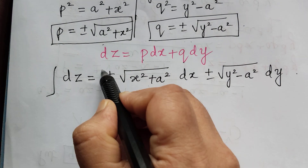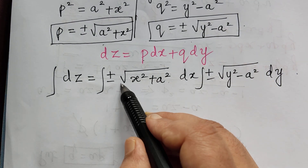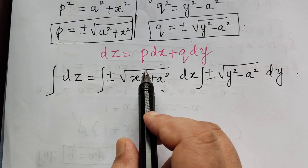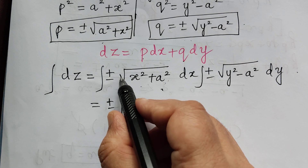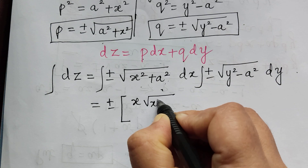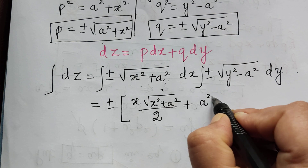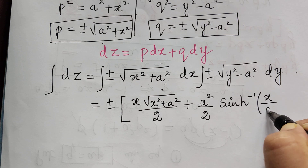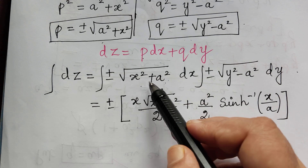Now we have to integrate on both sides. When we integrate, we use the formula from integral calculus for √(x² + a²). The formula is: ∫√(x² + a²) dx = x√(x² + a²)/2 + a²/2 · sinh⁻¹(x/a).